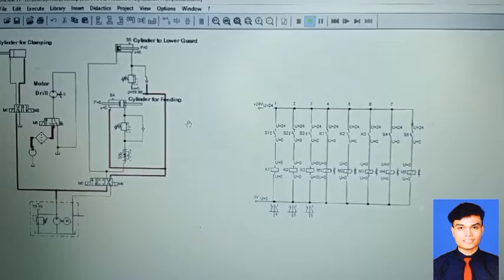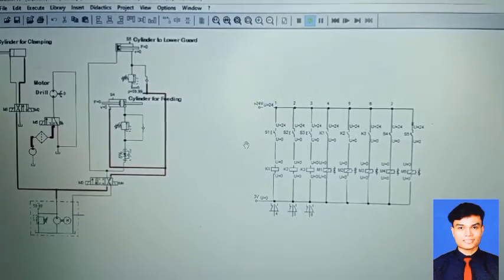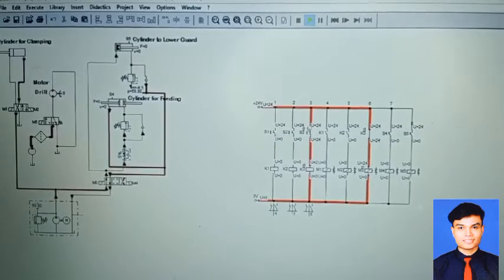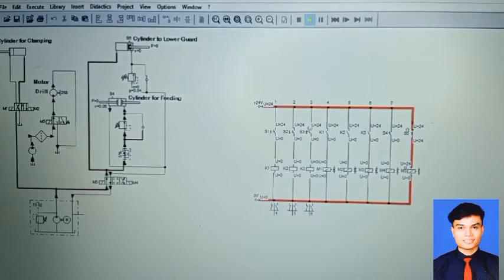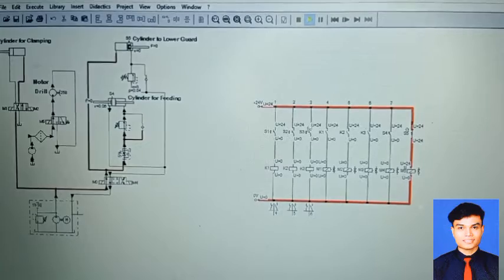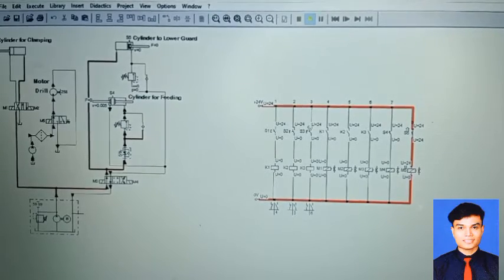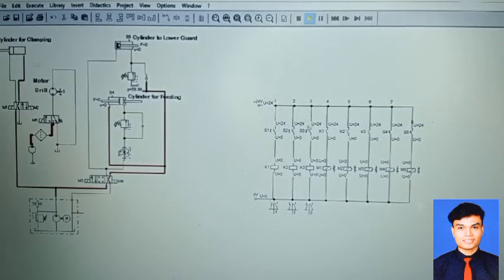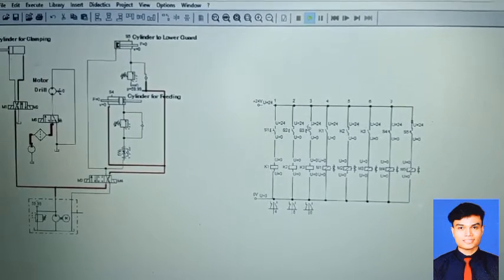Then, the feeding cylinder move to the left to make a hole until reach maximum. Then, auto return back. So, after return the cylinder, lower guard will be retracted and not touch the sensor. The motor drill will be deactivated after that.